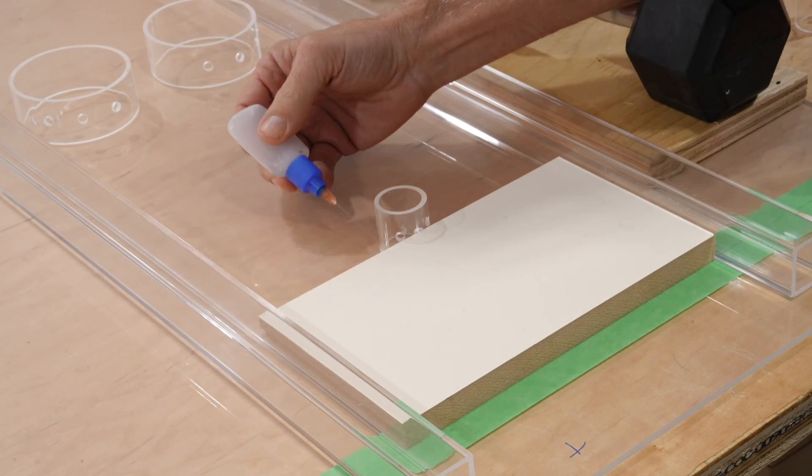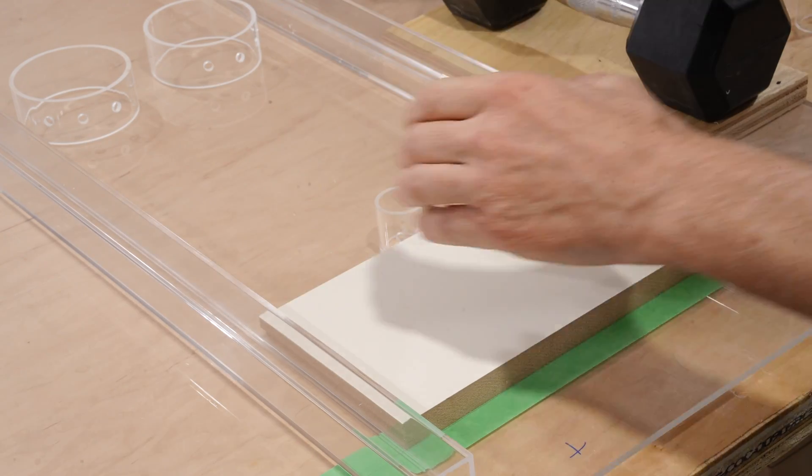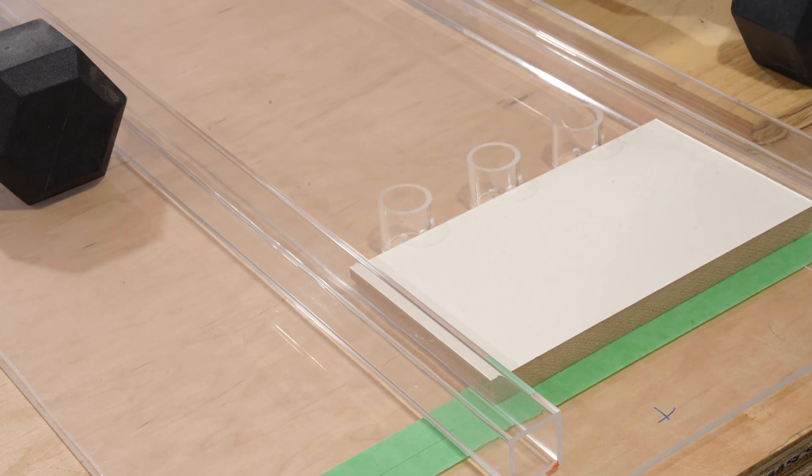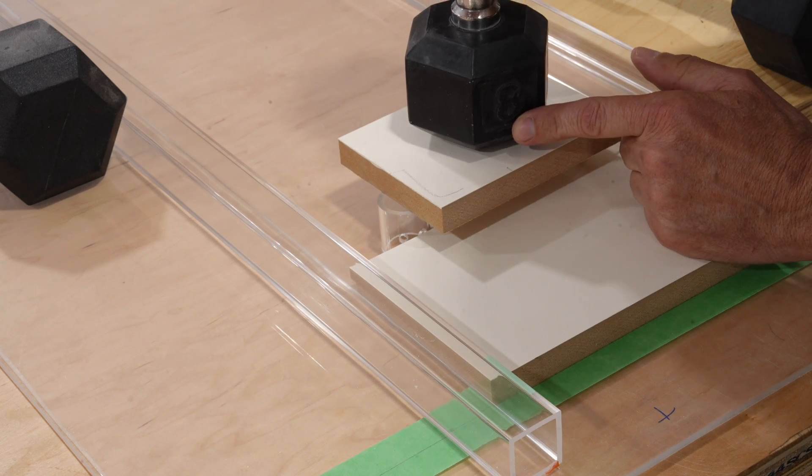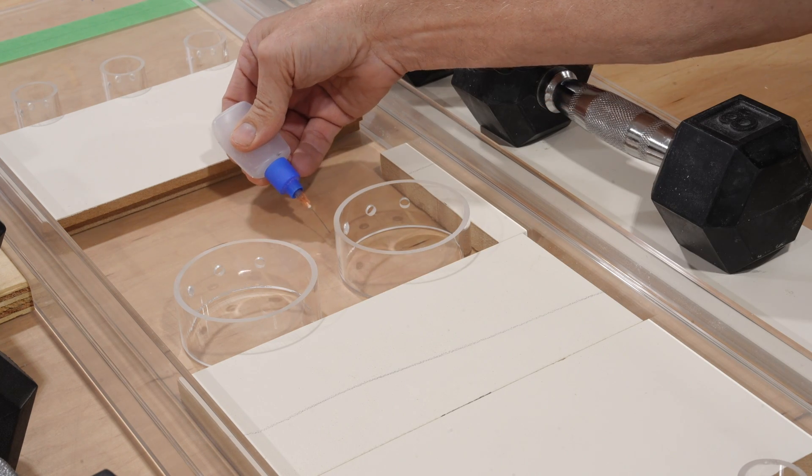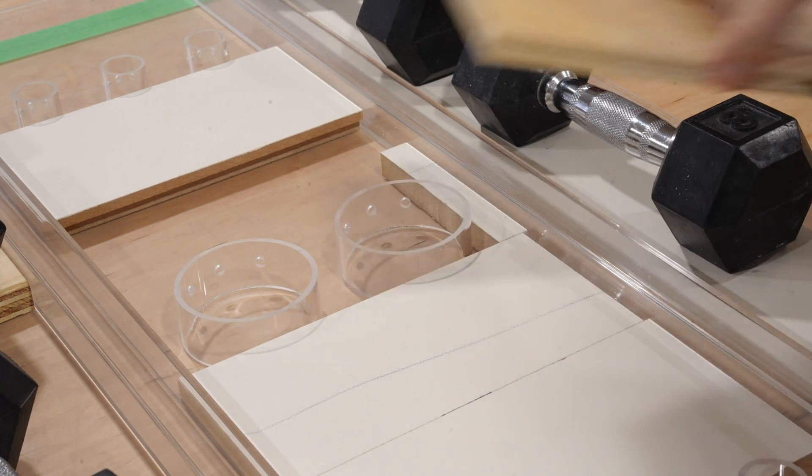The only difference when placing the top deflectors is they are 8 inches from the edge. The large deflectors are centered between the top and bottom smaller ones, and space evenly between the square tubes.